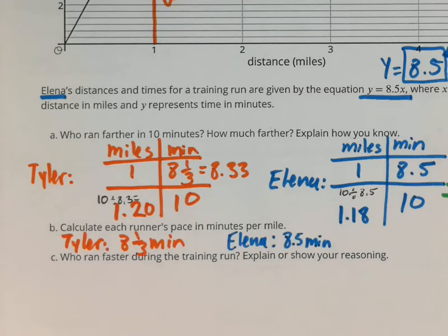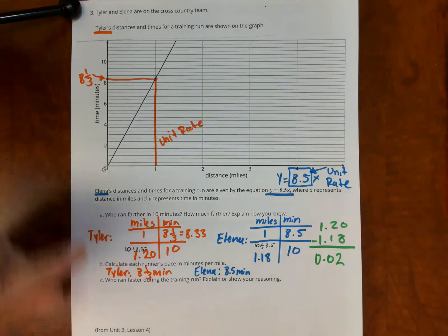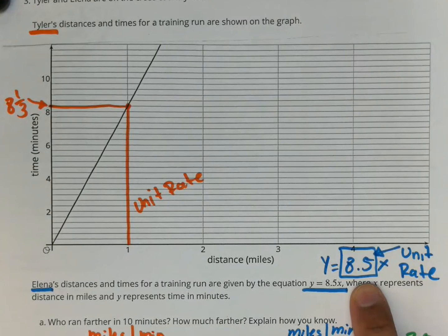And you can see that here in the table that we did. So Tyler's unit rate, we actually got it from the graph because you were seeing where it is for one. Elena's unit rate, we got it right here in the equation.